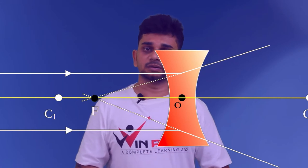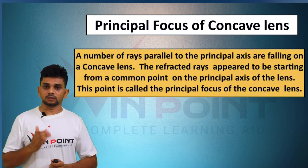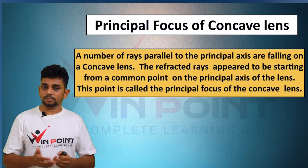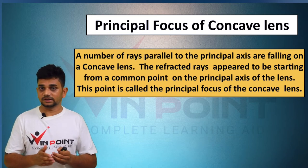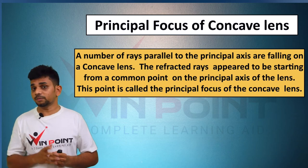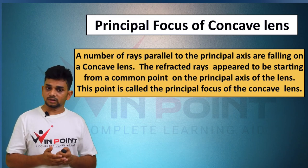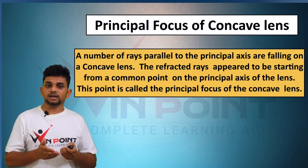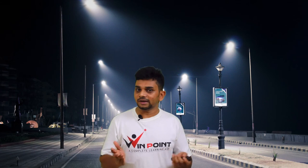Principal focus of a concave lens: a number of rays parallel to the principal axis are falling on a concave lens. The refracted rays appear to be starting from a common point on the principal axis of the lens. This common point is called the principal focus of the concave lens. If you like this video, please subscribe to my channel and share this video. Support us for providing free education to everyone. Thank you.